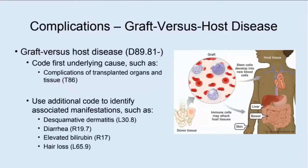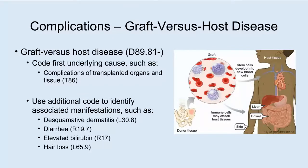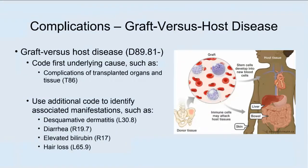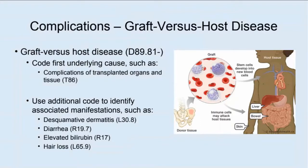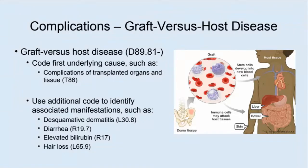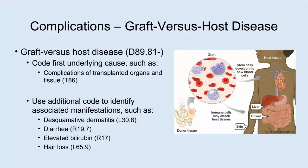Let's talk about graft-versus-host disease. In this condition, the cells from the transplanted organ attack the patient's other tissues. A note under this code reminds you to list T86 first — 'code first underlying cause' — and then graft-versus-host. There's also a note to use additional code to identify associated manifestations. You could end up reporting three or more codes: T86 for complication, D89.810 for graft-versus-host disease, and for example L65.9 for hair loss. If there are more manifestations, you may need more than three codes.